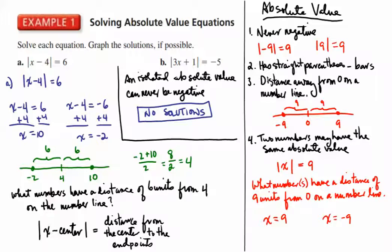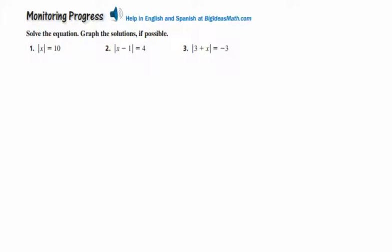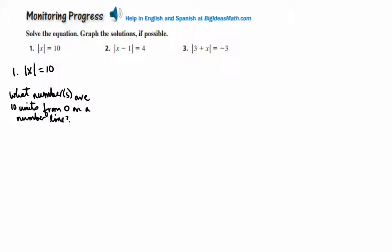Now I'm going to scroll up so you can see some practice problems. I'd like you to stop the video and try them on your own before continuing. This is a chance to try problems of this type yourself; then continue the video to check your answers. The first problem: absolute value of x equals 10. This is asking what number or numbers are 10 units from 0 on a number line. We set up two equations: x equals 10, and x equals negative 10.